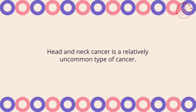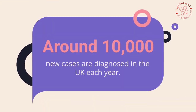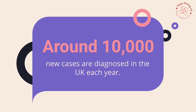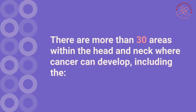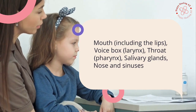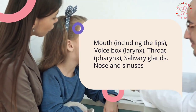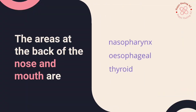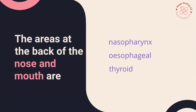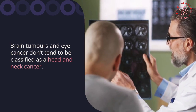What is head and neck cancer? Head and neck cancer is a relatively uncommon type of cancer — around 10,000 new cases are diagnosed in the UK each year. There are more than 30 areas within the head and neck where cancer can develop, including the mouth, lips, voice box (larynx), throat (pharynx), salivary glands, nose and sinuses, and the nasopharynx. Esophageal, thyroid, brain tumors and eye cancer don't tend to be classified as head and neck cancer.